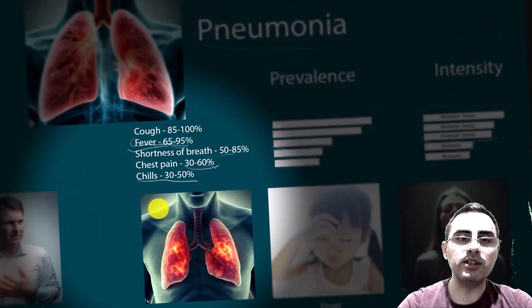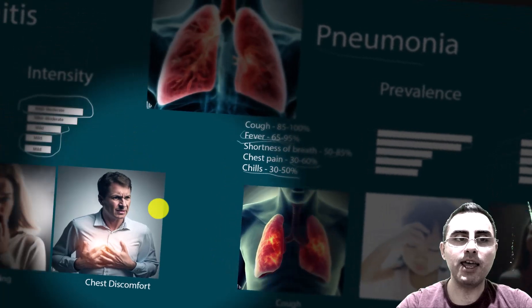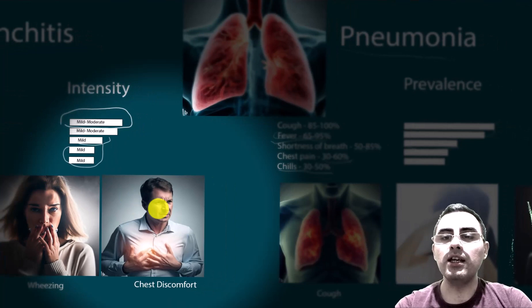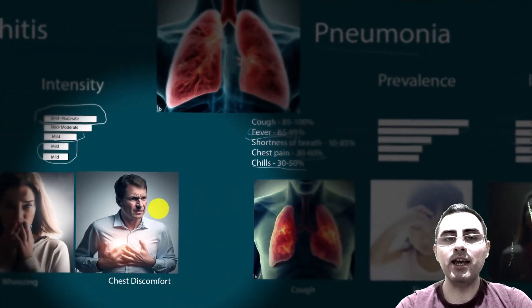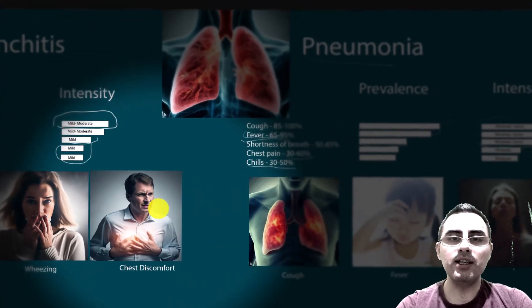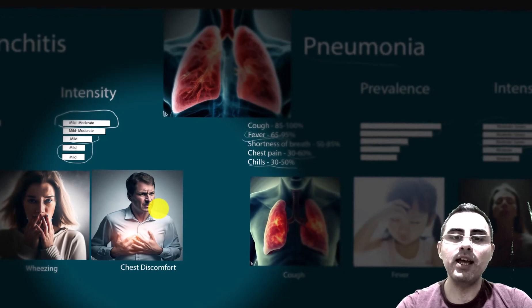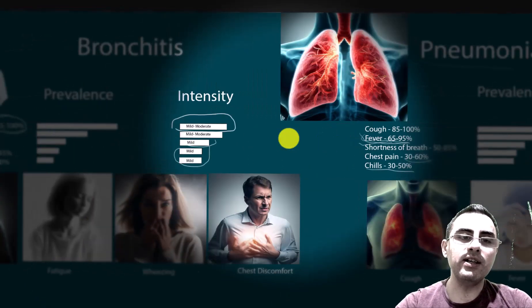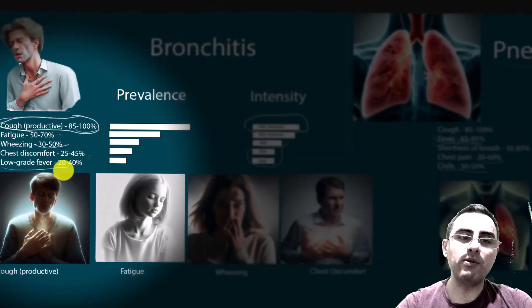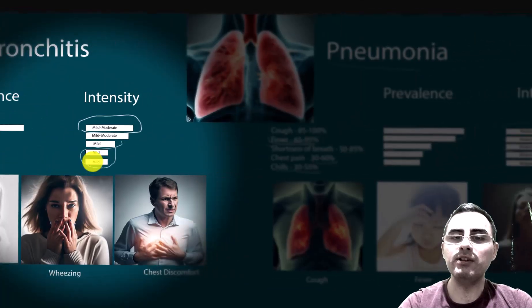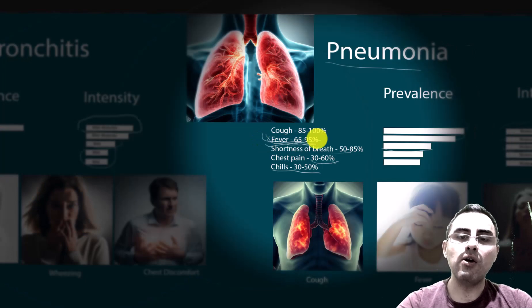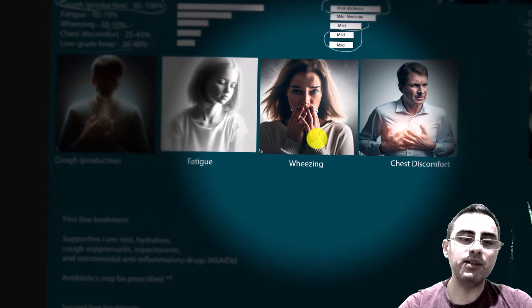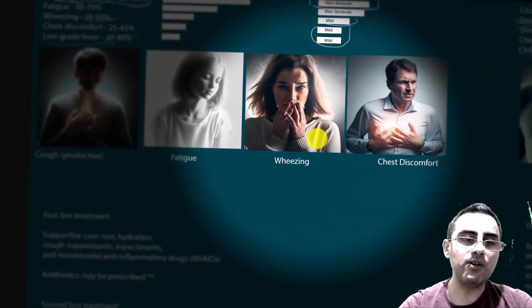The most common differences between pneumonia and bronchitis are the intensity of symptoms — intensity is usually much more severe in the case of pneumonia — and fever is important as well, because fever is not common for bronchitis, while in pneumonia, fever occurs in almost 100% of cases.